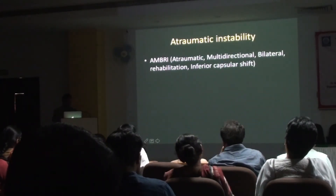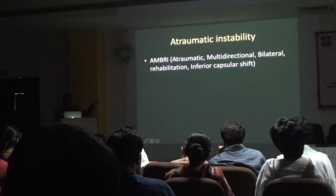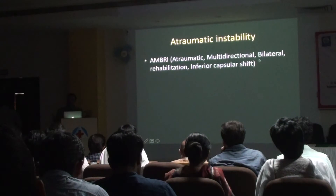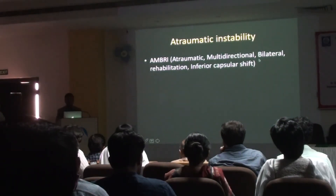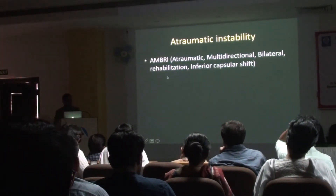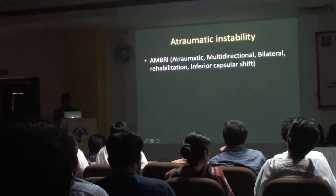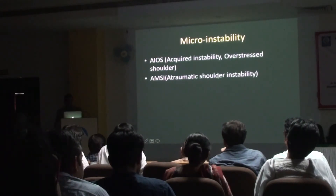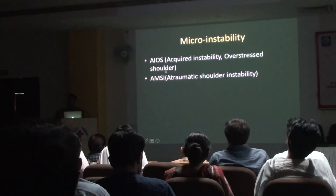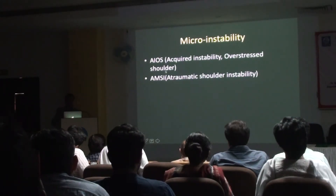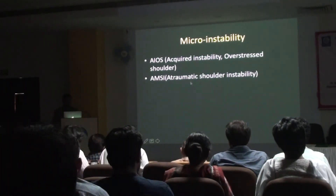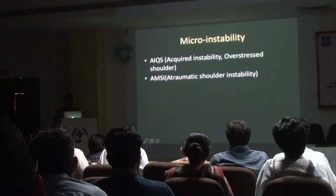Atraumatic instability — AMBRI: Atraumatic, Multidirectional. Unlike traumatic which is unidirectional, you get laxity all the way around — a global laxity. These patients tend to have a structural abnormality such as glenoid dysplasia, and it tends to be bilateral rather than unilateral. Most times manage conservatively; if surgery is required, you're talking about capsular shift. Micro-instability represents acquired instability in over-stressed shoulders — especially bowlers, javelin throwers, and volleyball players tend to have a lot of these AIOS issues.